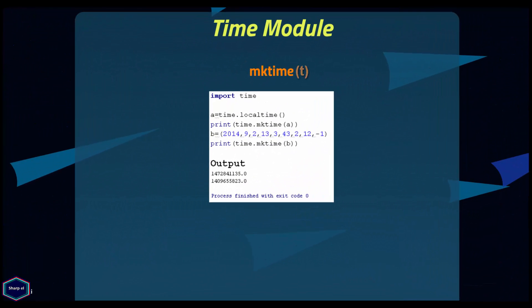The mktime() function is the inverse of localtime(). It takes exactly one argument — a time tuple — and converts it into the number of seconds since the epoch.